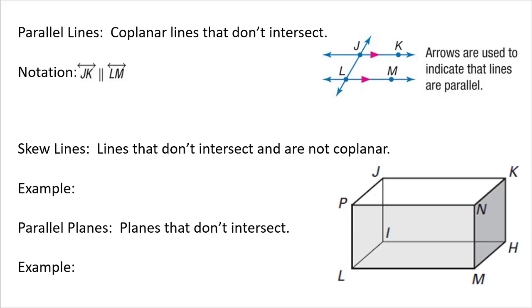Parallel lines are coplanar lines that don't intersect. If you look at this diagram over here, you have lines that are in the same plane, lines JK and LM. We denote lines are parallel by having a little arrow on them. So that's what those little arrows are. And then we have our notation line JK is parallel to line LM.